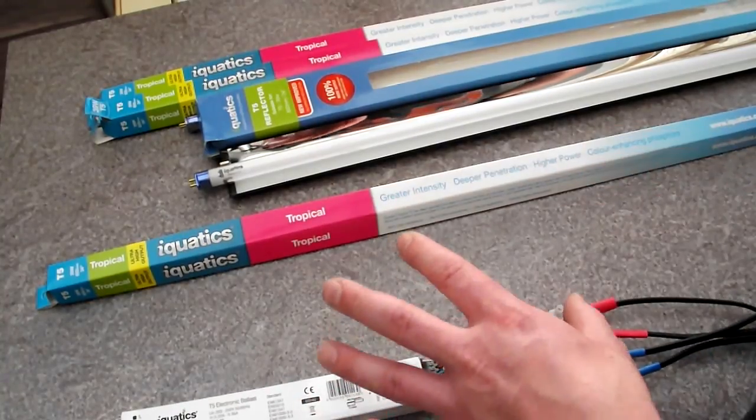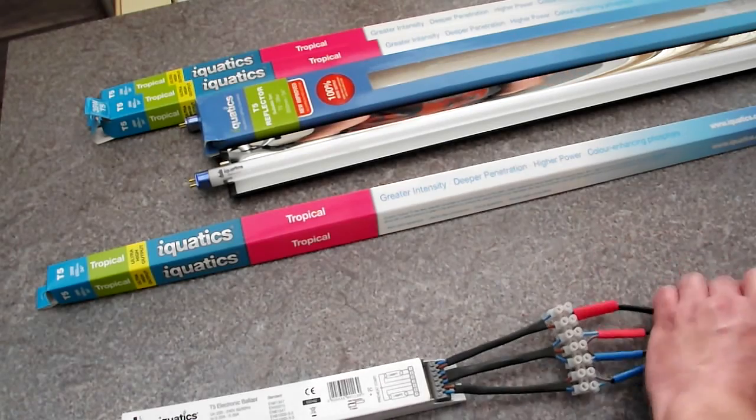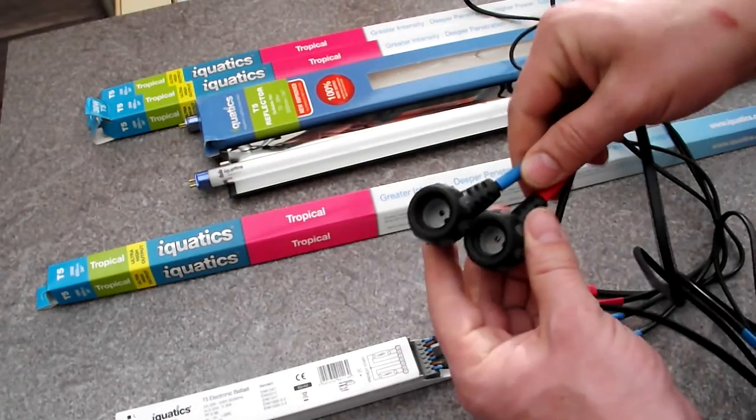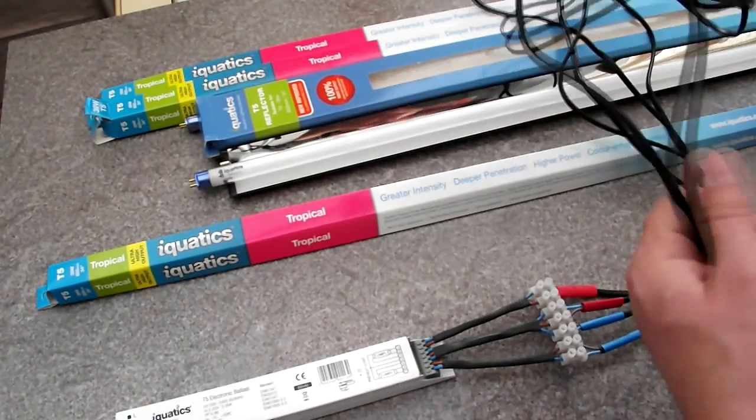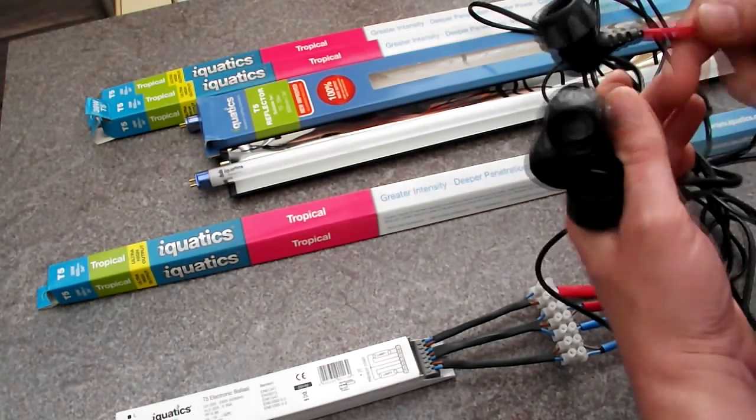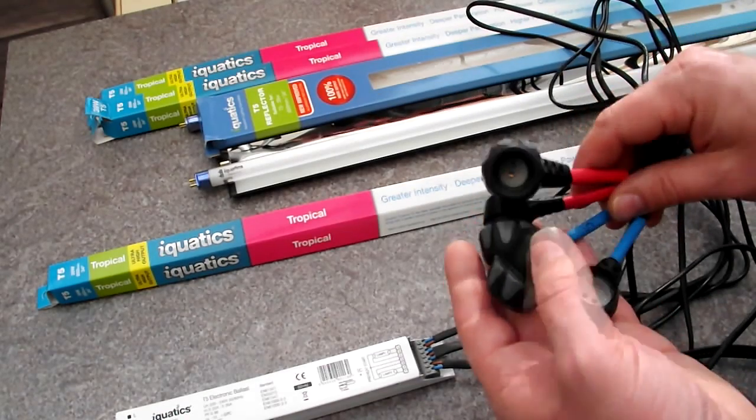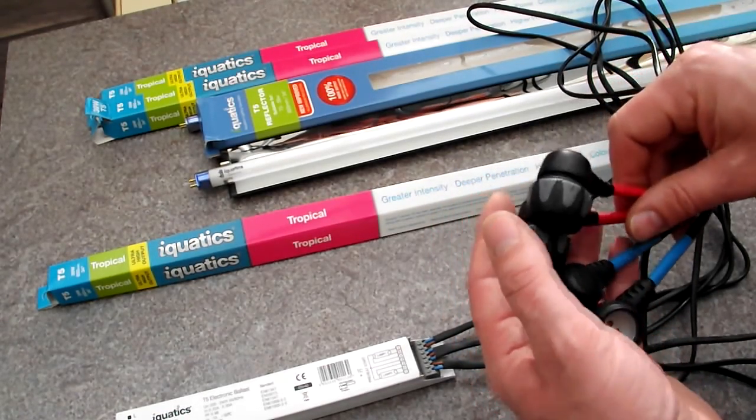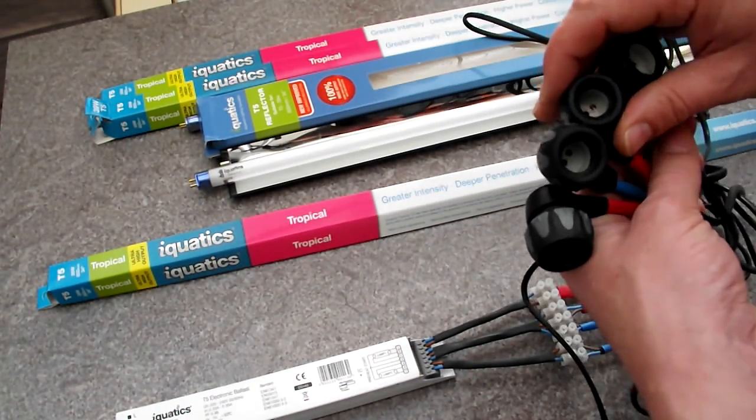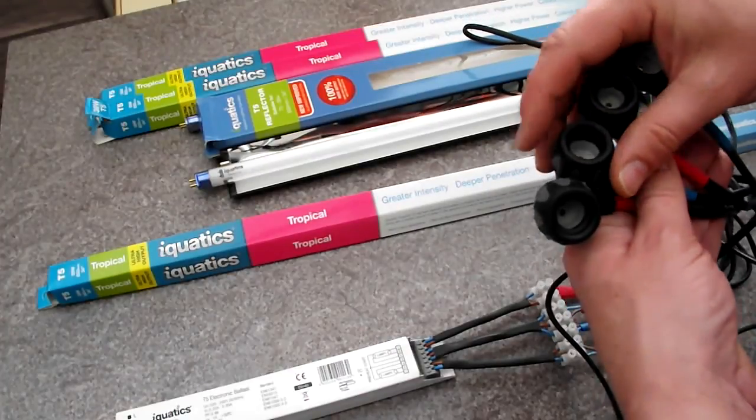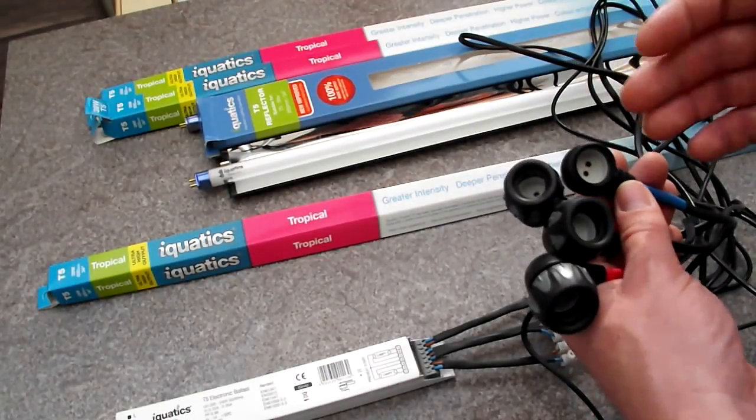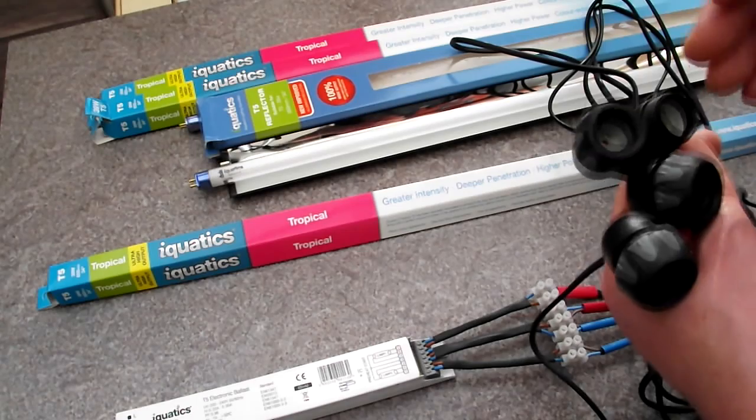From Aquatics, I got the ballast, the tubes and reflectors, but I bought these separately. These are the T5 end caps, which I bought elsewhere. You can get everything else you want from Aquatics, but they don't sell the end caps. I believe they've got plans to sell them in the future, but they don't sell them at the moment. These are rated for IP67, which means they are dust proof and waterproof up to a meter deep. So if you dropped your tube with your end cap on into the water, it shouldn't short out. I'm not going to try that. But that's what they're rated for.